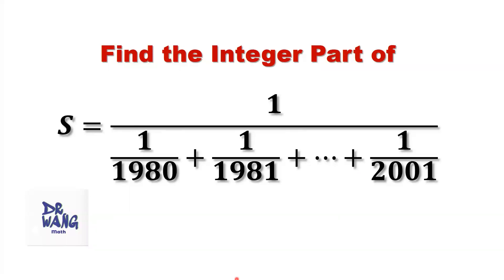Hello everyone, I'm Dr. Wen. Here is the question: Find the integer part of S. Here, S equals 1 over 1980 plus 1 over 1981 plus plus until plus 1 over 2001.